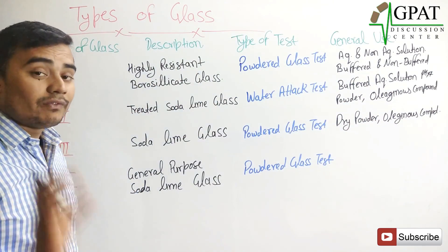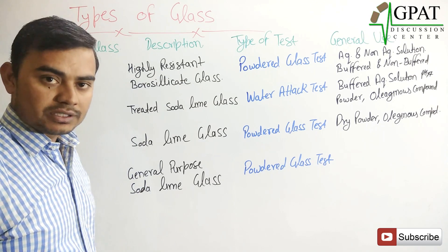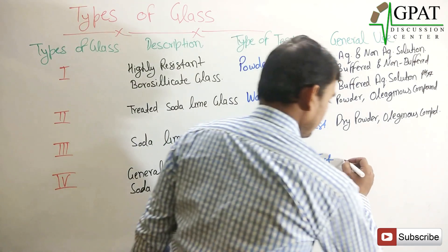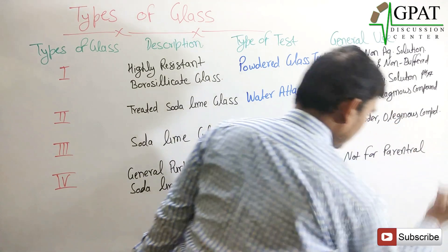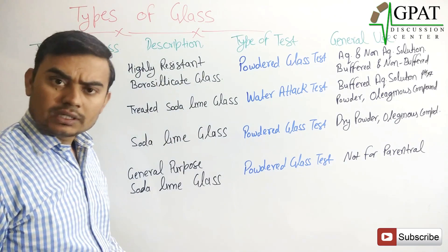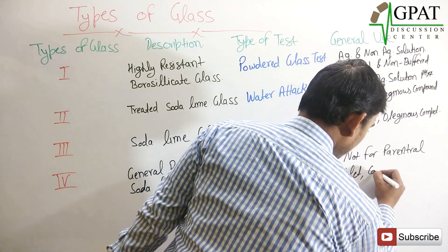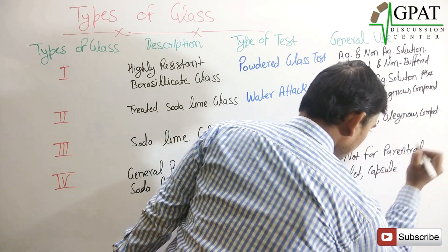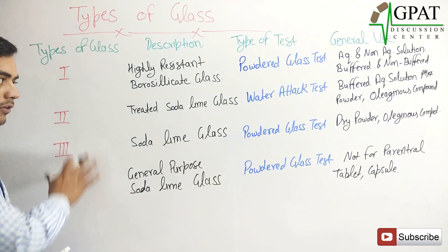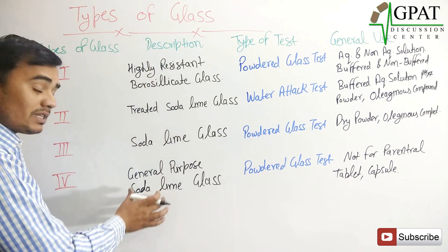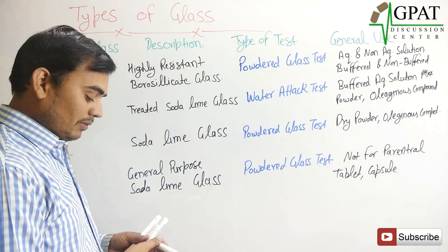An important exam point: Type 4 glass is not meant for parenteral preparations. If not for parenteral, then what is it used for? It is used for tablets, capsules, and all other preparations — but not for parenteral. This covers the type of glass, their names, the tests performed, and their uses.